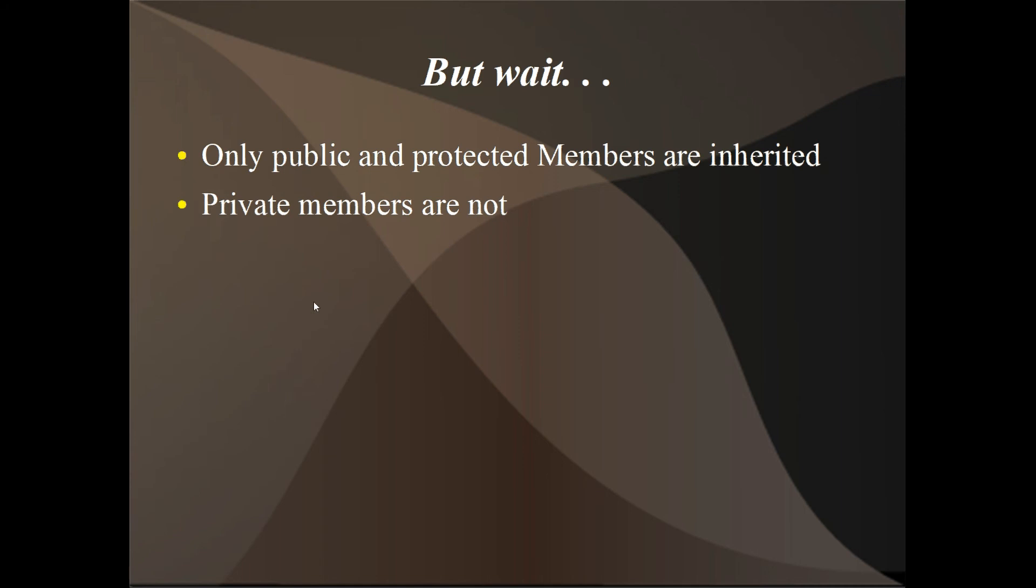So only public and protected members are inherited. Now we haven't talked too much about protected members, but just know they are inherited. And private members are not inherited. So if we declare a method or a variable private, if we extend that class, the subclass doesn't get those methods or variables. That's something important to keep in mind.